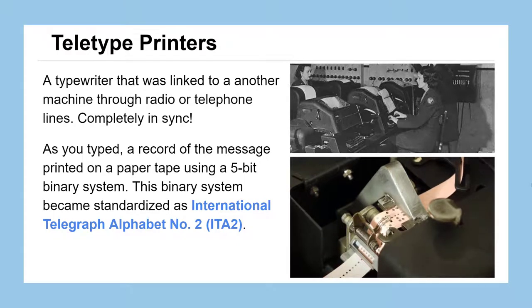The teletype printers we can see in the top right are essentially just very large typewriters, but they had the benefit of being linked to a corresponding unit that could be placed further away, maybe even several miles away, or across a country or a state, that were linked by radio or telephone lines. And whatever operation was performed on one of these units would be mirrored exactly with the paired unit on the other side of the communication link.